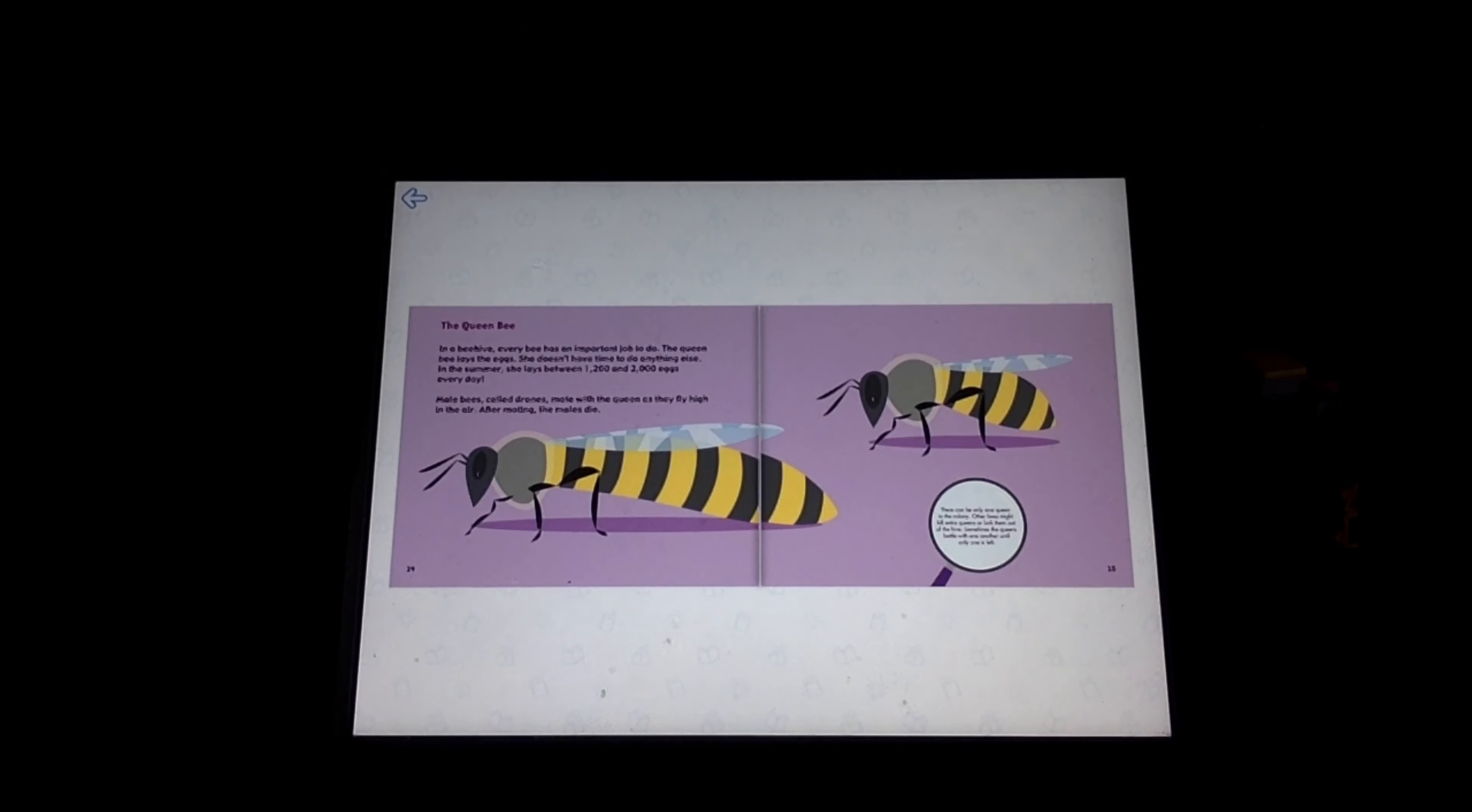The queen bee. In a beehive, every bee has an important job to do. The queen bee lays the eggs. She doesn't have time to do anything else. In the summer, she lays between 1,200 and 2,000 eggs every day.